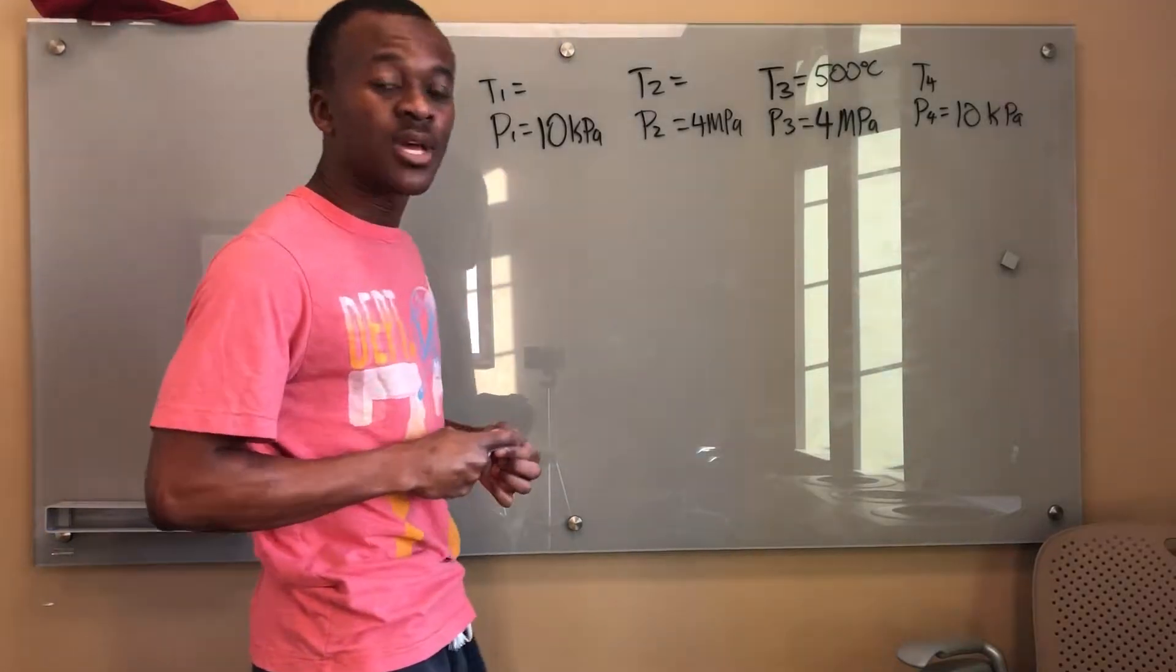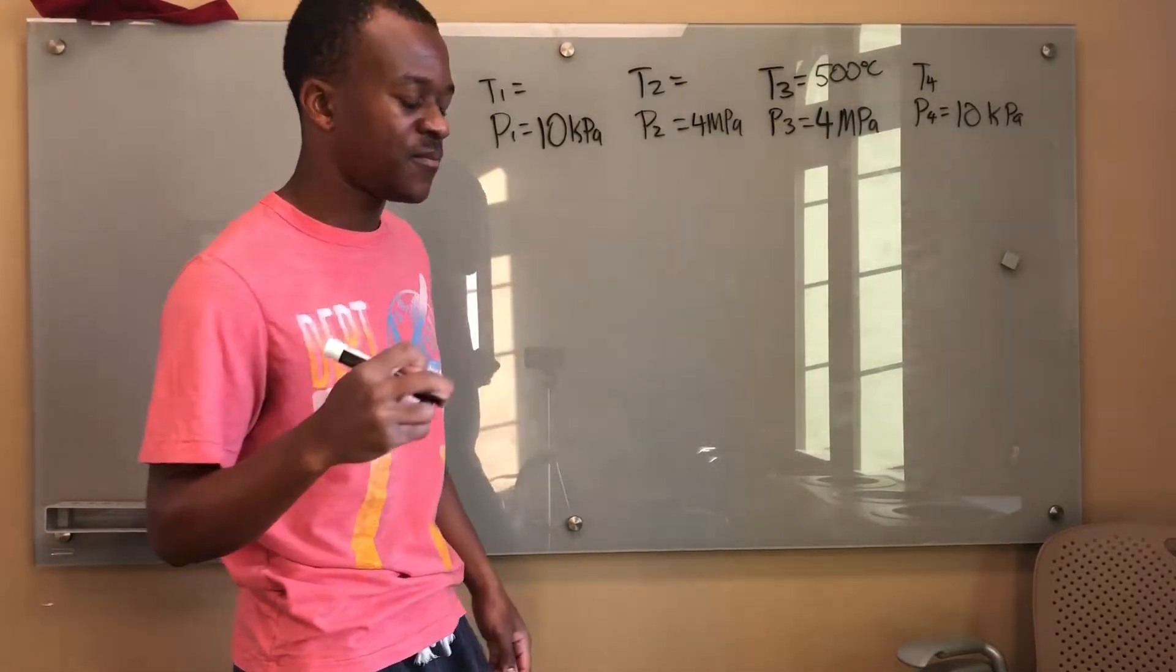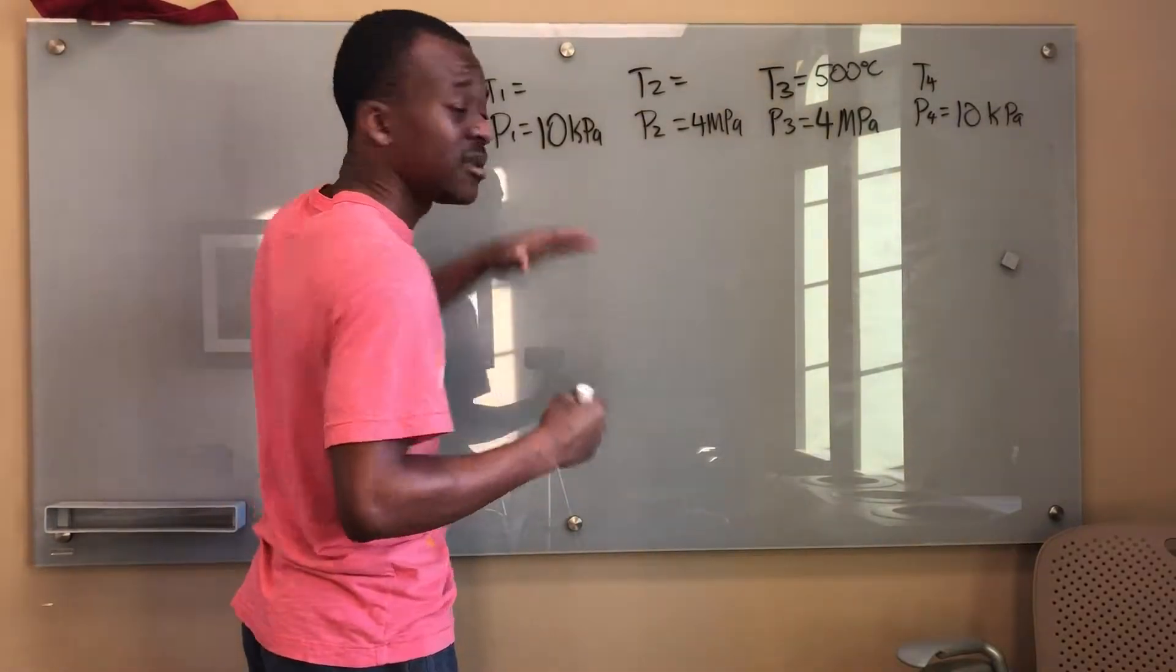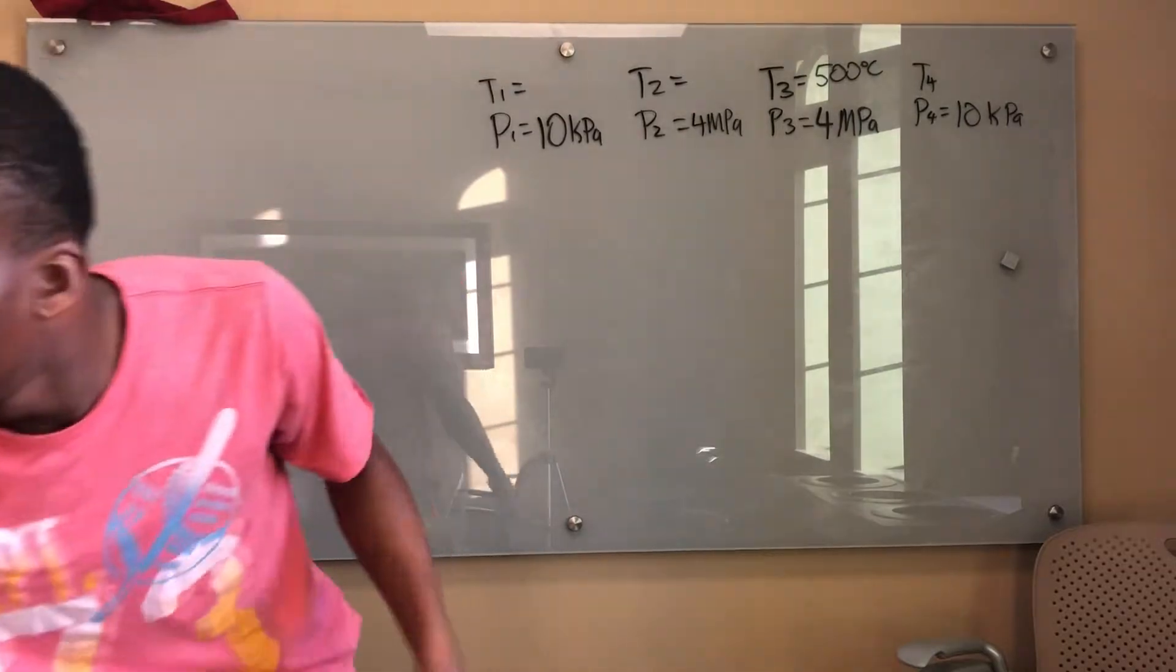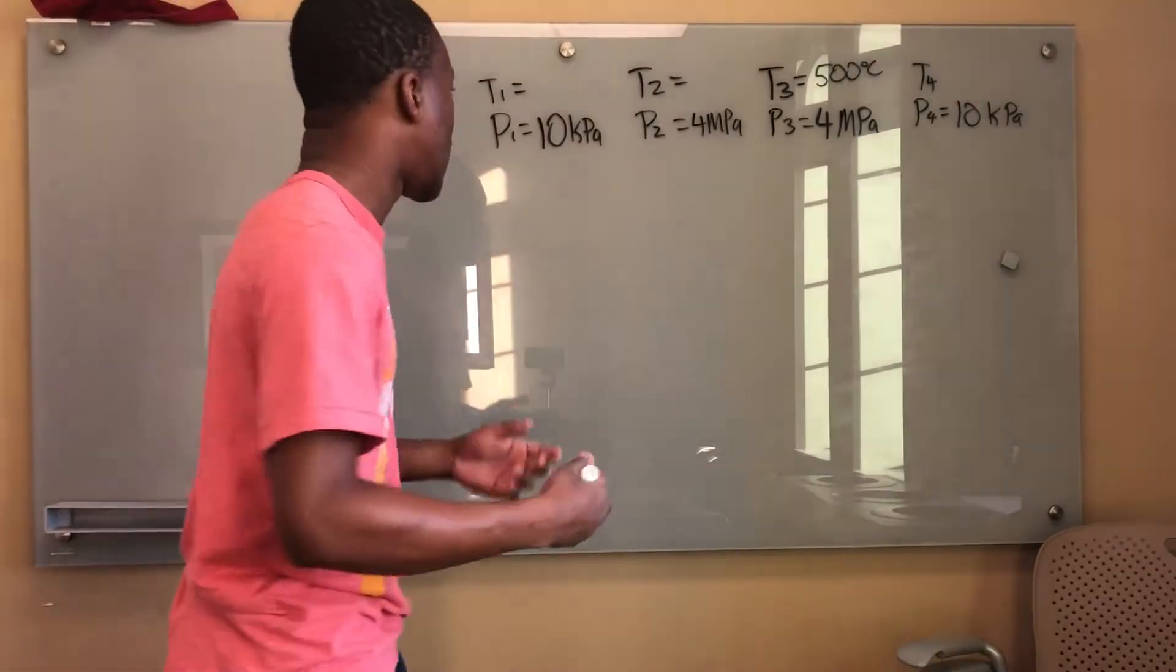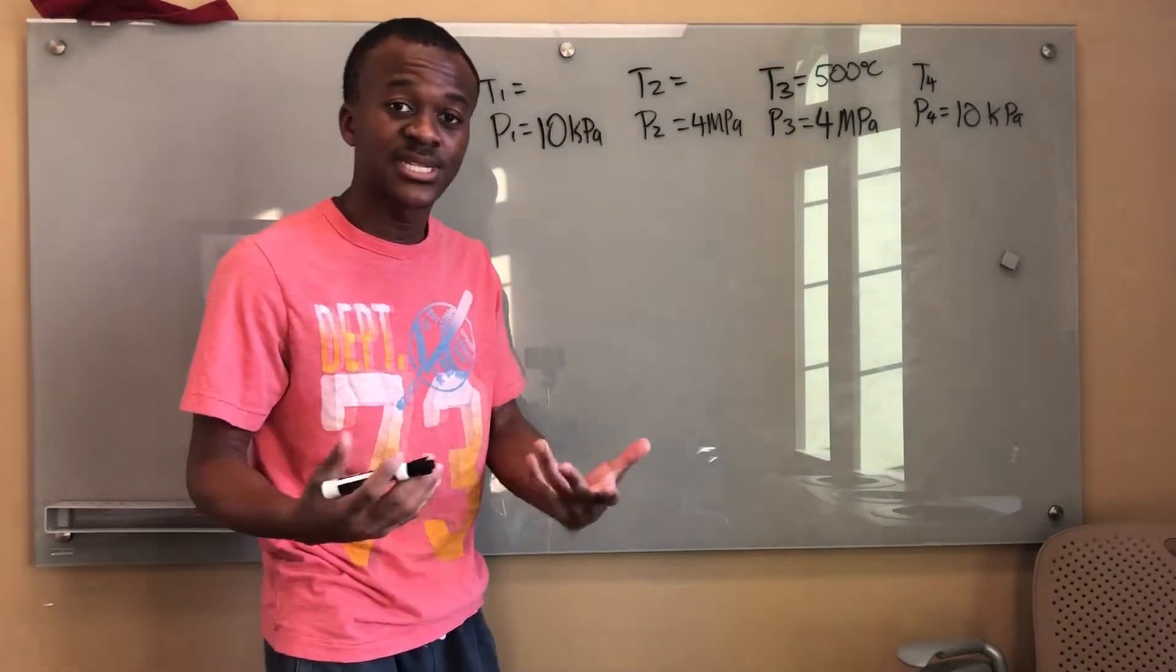Now I also know my t1 because for the ideal Rankine cycle we always start off as a saturated liquid. I'm going to go to my 10 kilopascals in the steam tables, I got this little booklet that has all the property tables, and I'm going to find my saturation temperature there. Since it's a saturated liquid, the temperature is the saturation temperature.